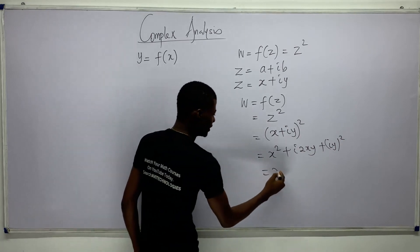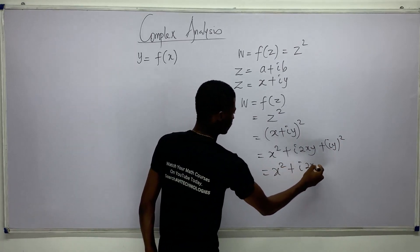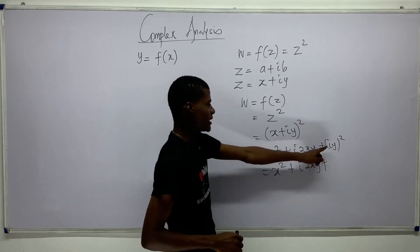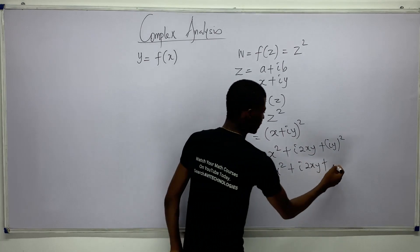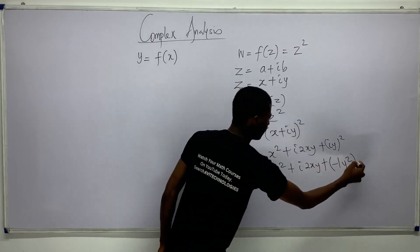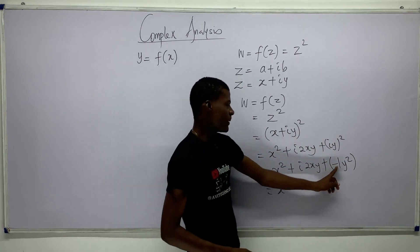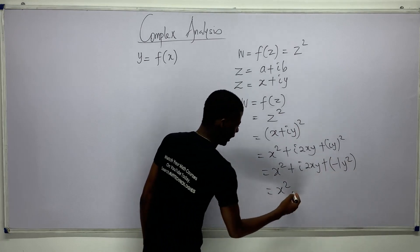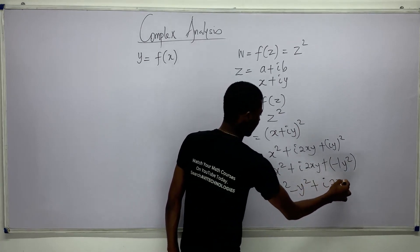Continuing the expansion: we have x squared plus 2ixy, and since i squared equals minus 1, the last term becomes minus y squared. So the full result is x squared minus y squared plus 2ixy.